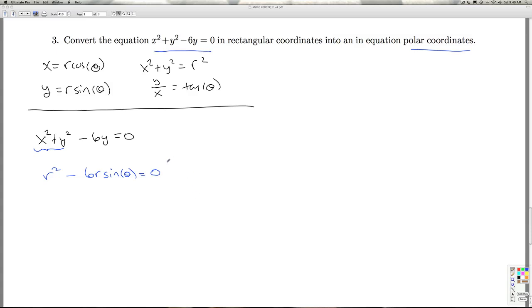Usually what we want to do is solve r as a function of theta if that's feasible. Here I've got an r in both of these terms, I can factor it out. So here I get r is either 0 or r is equal to 6 sine theta.